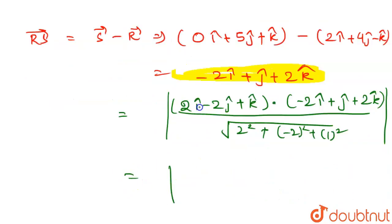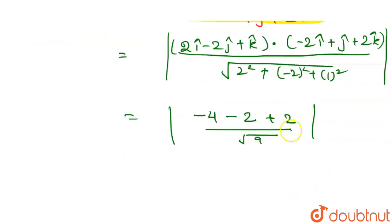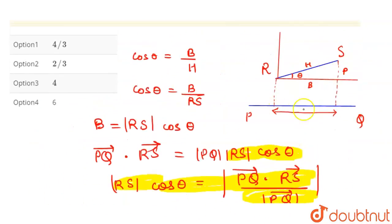This will give us: 2 × (-2) is -4, (-2) × 1 is -2, and 1 × 2 is +2. So -4 - 2 + 2 = -4 upon 3. Taking the modulus, this becomes 4 upon 3. So the projection of RS on PQ is 4/3.